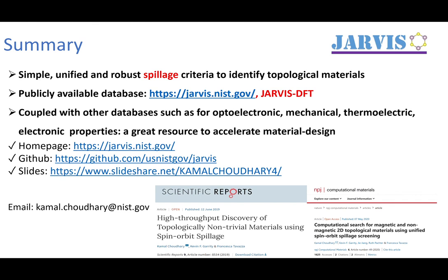In summary, I have showed you spillage can be used as a simple and powerful technique for finding topological materials for both defect and perfect systems. The database is available at jarvis.nist.gov, especially JARVIS-DFT. Find more details on our two papers, and I'll be happy to answer any question if you have through email or so. Thank you.